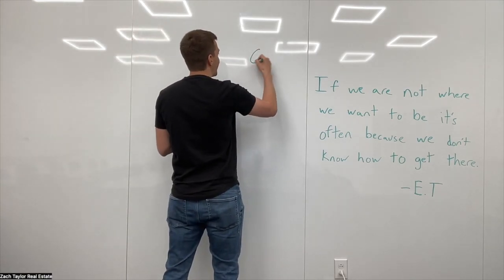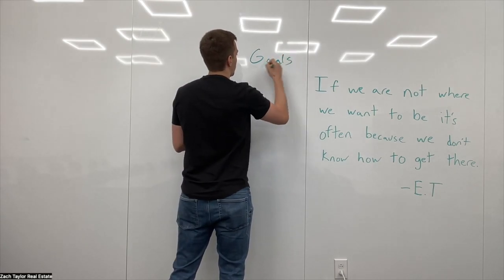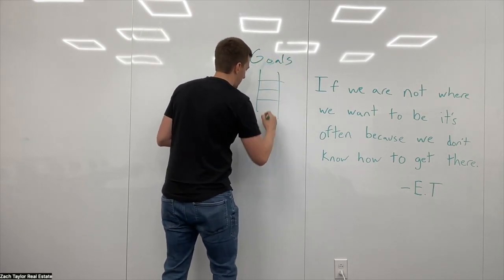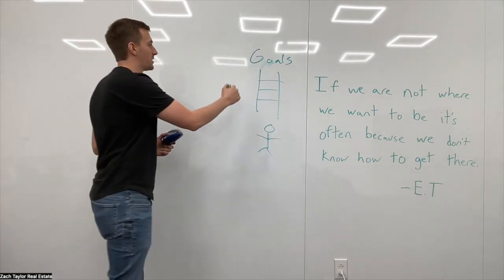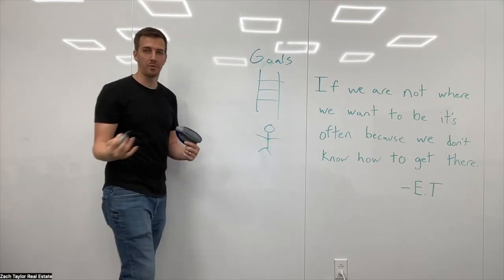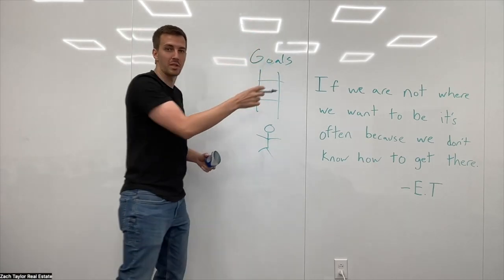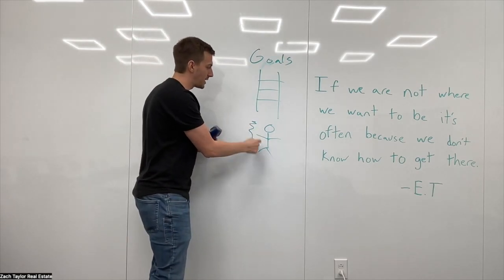And so if we start looking at our situation, getting to our goals is almost like climbing a ladder. There's different stages that we could be at. Some of our agents are halfway to their goal being halfway through the year. Some have already hit and surpassed their yearly goal already in July, or some agents are struggling and they're stuck down here.